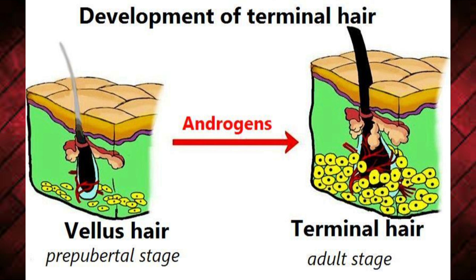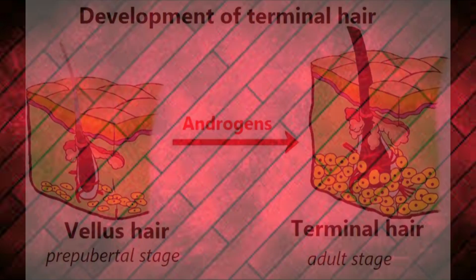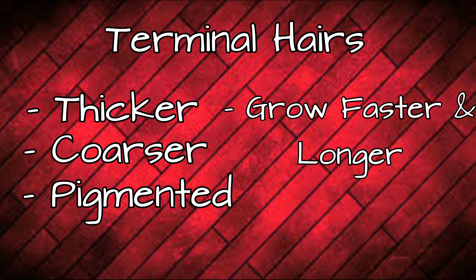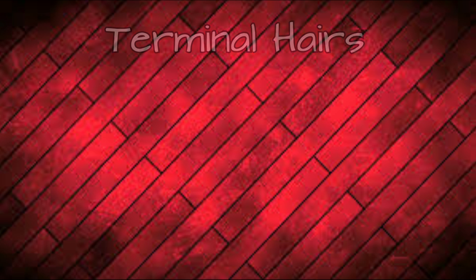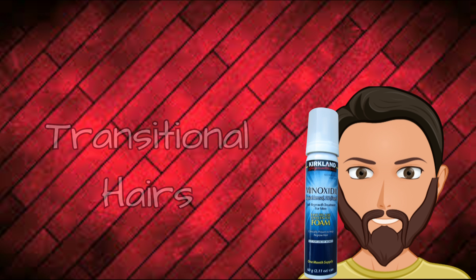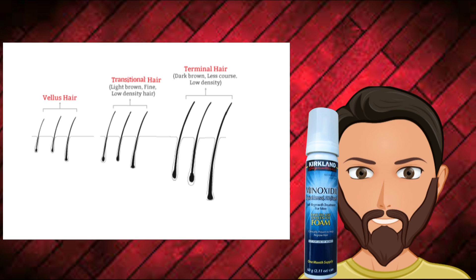Terminal hairs are located deeper within the subcutaneous tissue. They have a strong network of capillaries to the dermal papilla, which brings more oxygen-rich blood, more nutrient-rich blood, and more androgen-rich blood to the hair follicle. In terms of our beards, terminal hair is generally thicker, coarser, and more rough in texture than vellus hair, which is generally softer. Terminal hairs also grow a lot faster and longer naturally. Those using minoxidil can force vellus hairs to grow longer, and over time they may gain some pigmentation — these are referred to as transitional hairs.